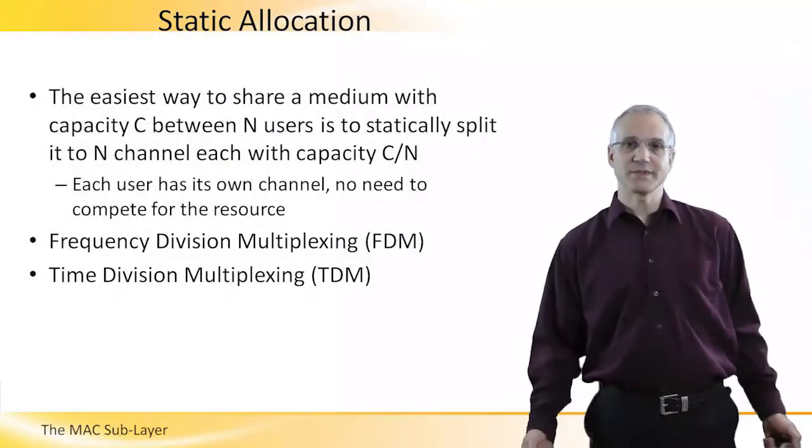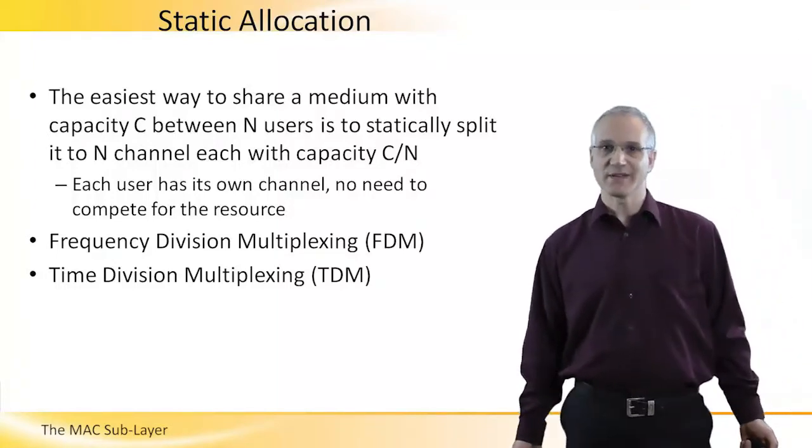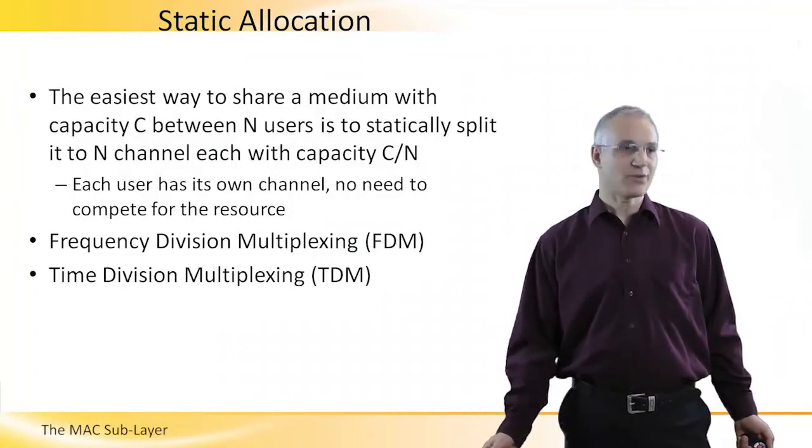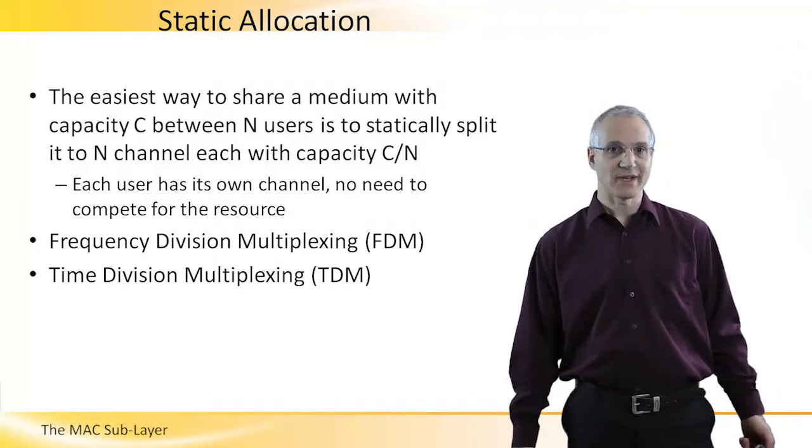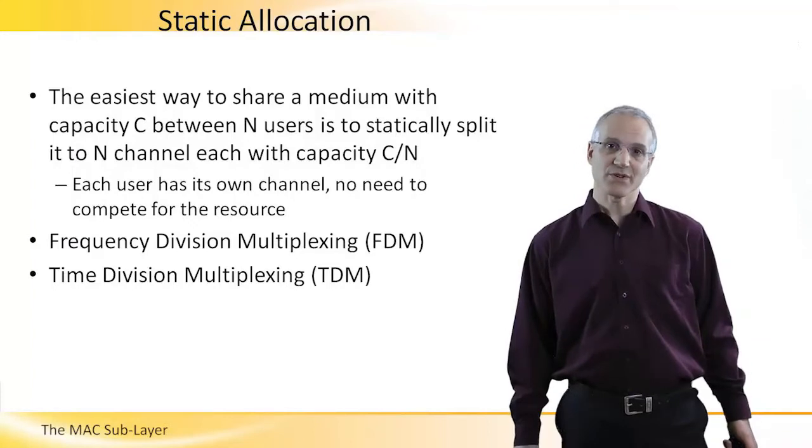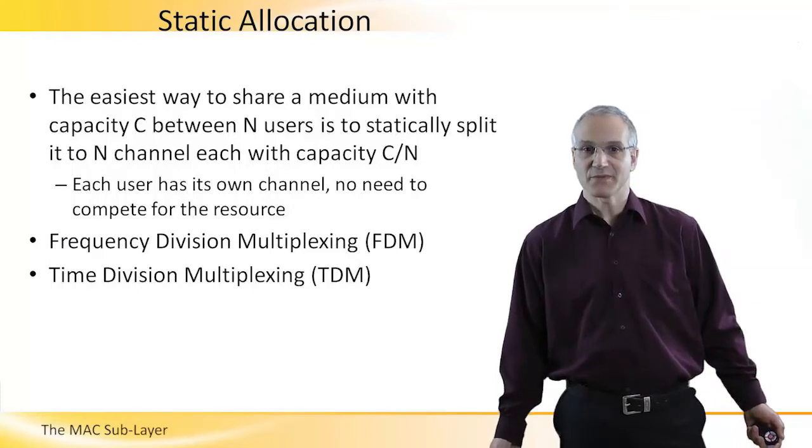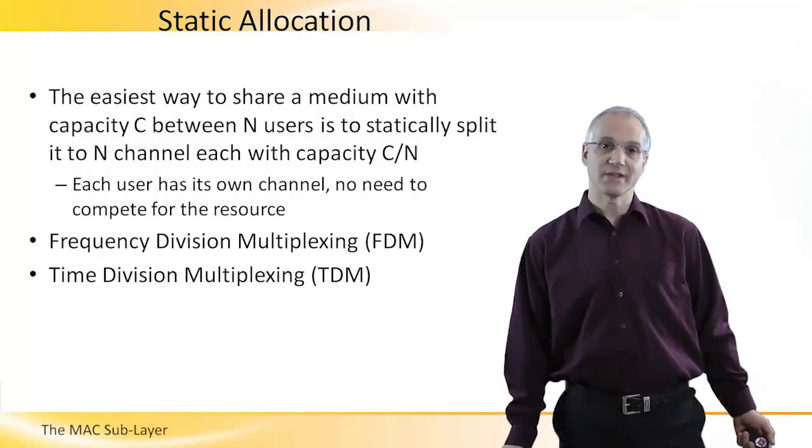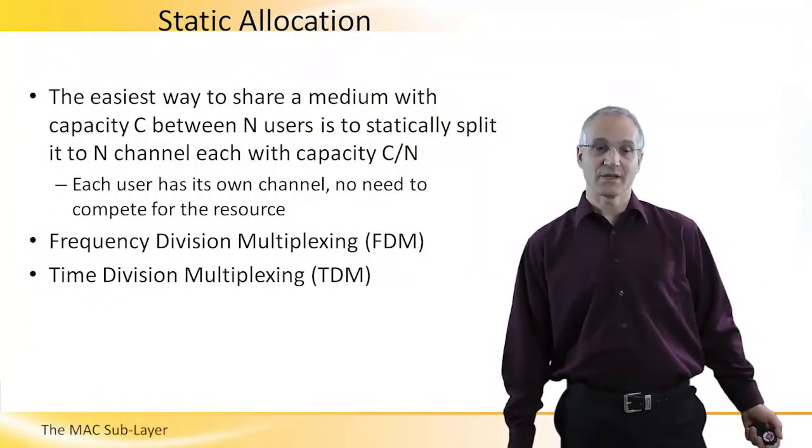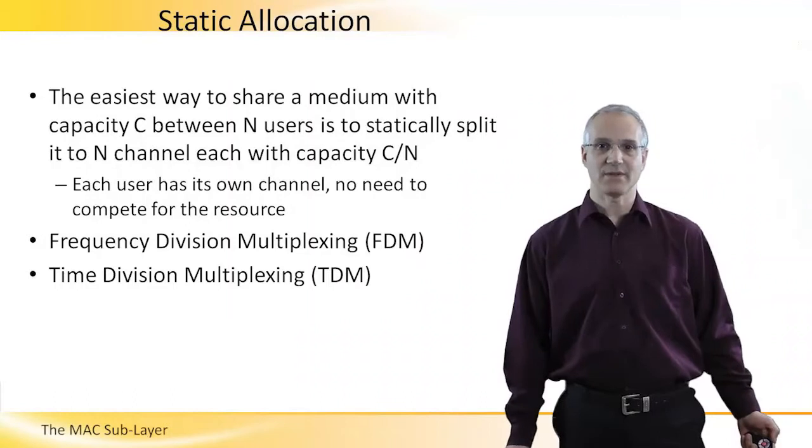When multiple users share the same medium with some capacity C, the easiest way to make it work is to allocate each user its own share of the capacity. For example, C over N of the capacity. So each user can use his share of the channel regardless of the activity of other users. This can be done, for example, in frequency division multiplexing, where each user is allocated its own frequency. Or in time division multiplexing, where the time is divided into slots and each user has its own allocated time slots.